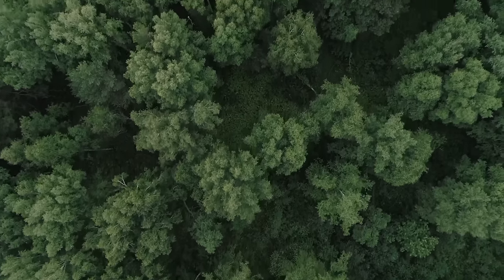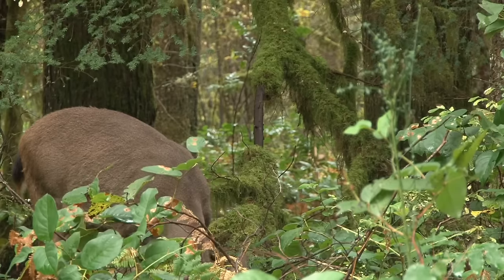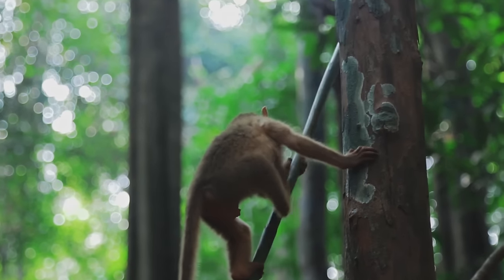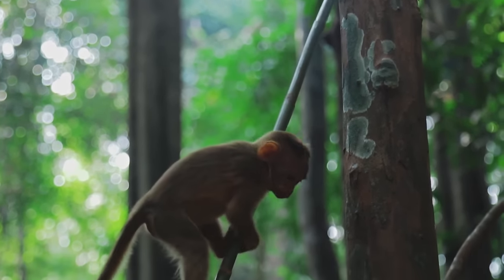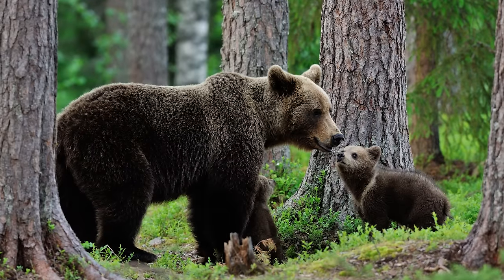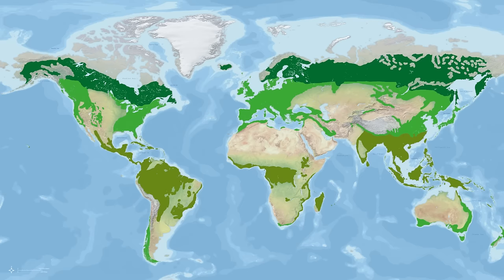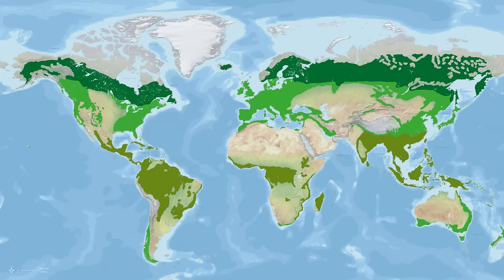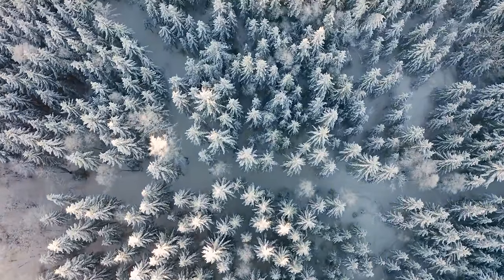Where tundra is characterised by a complete lack of trees, forest biomes are defined by them. These densely vegetated areas make up around 40% of the world's land mass and are split into three main types: boreal, temperate, and tropical. These classifications can be fairly accurately defined by latitude. A band of boreal forests sits beneath the tundra, followed by a strip of temperate forest further south. Tropical forests sit in the world's equatorial regions and make up the largest portion of the world's forest at around 45%.